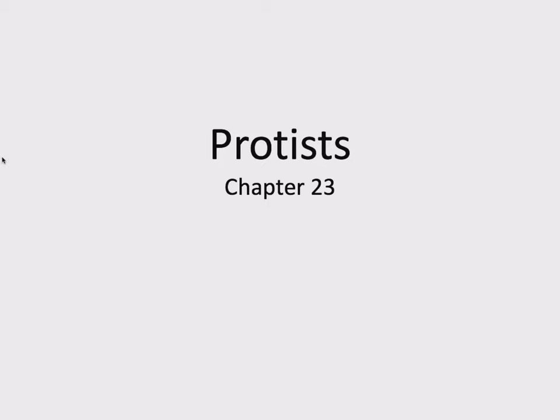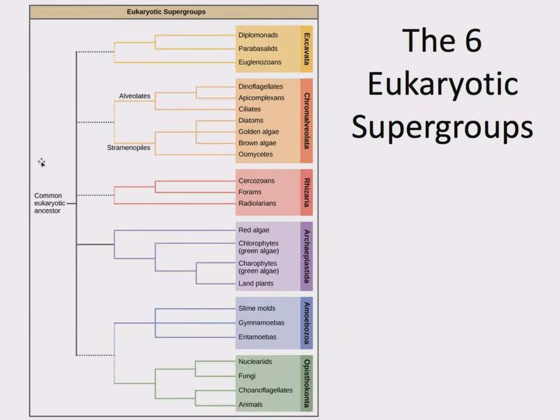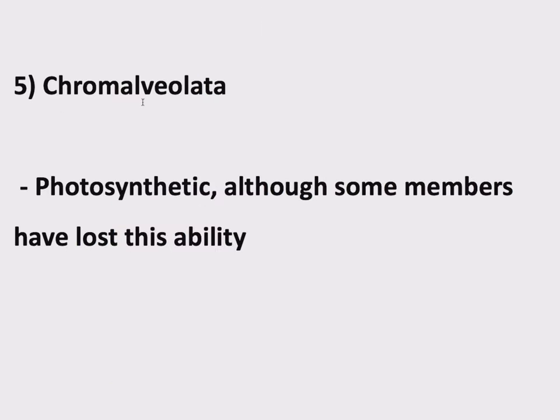Hello, BISC 132. This is the beginning of recorded lecture 1-5, still in this chapter on protists. It is admittedly a long one, but we're going to finish it up in this recorded lecture. We've been going through these six supergroups of eukaryotes. We've only got two left, but they're two of the bigger ones. Let's turn our attention now to the biggest of these, a supergroup called Chromalveolata.